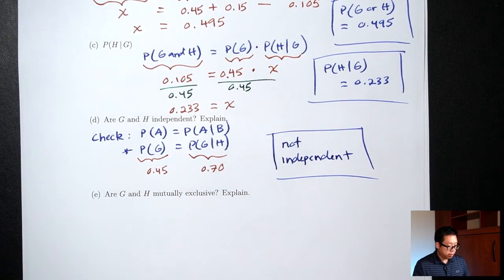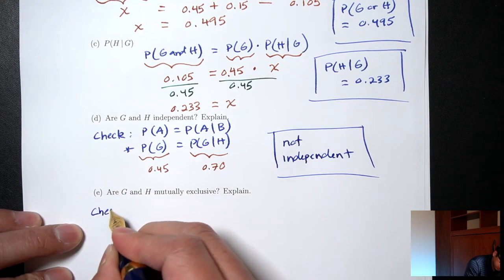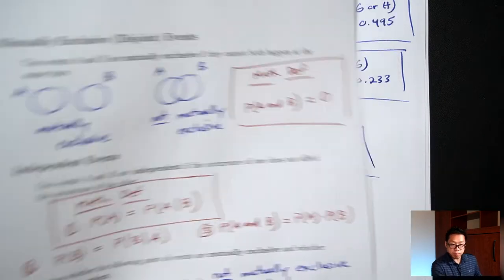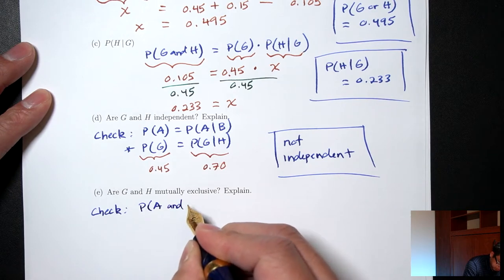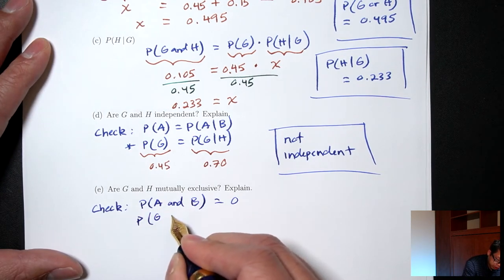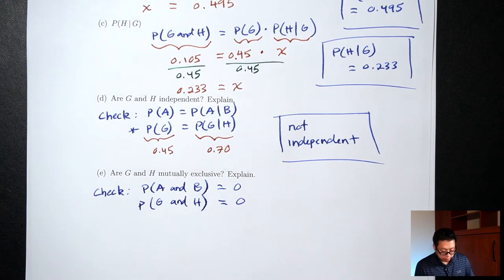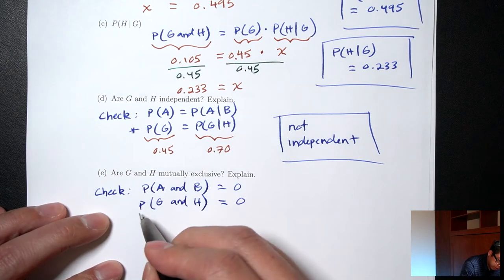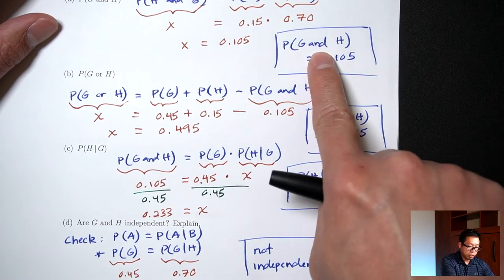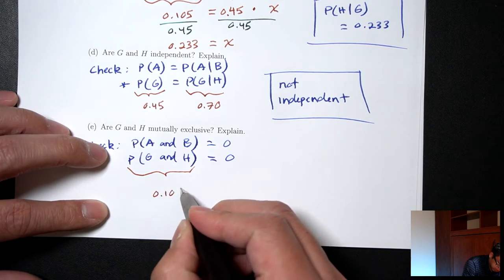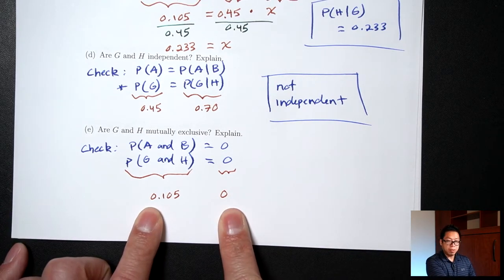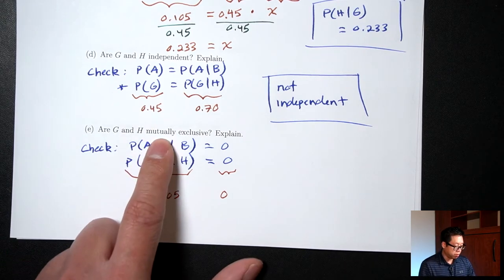Part E: are G and H mutually exclusive? We check P(A and B) = 0, which becomes P(G and H) = 0. Left side: P(G and H) = 0.105. Right side is 0. They are not equal, so G and H are not mutually exclusive.